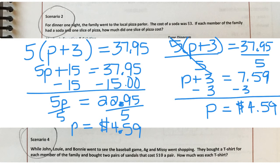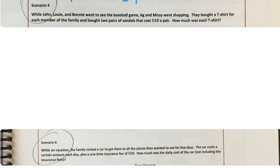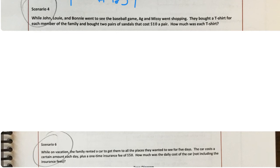Remember, at any time, if I'm going too fast for you, just pause it, make sure you have stuff written down, and then push play again. I'm going to move on to scenario four. Same family. While John, Louie, and Bonnie went to the baseball game, Ag and Missy went shopping. They bought a t-shirt for each member of the family and bought two pairs of sandals that cost $10 a pair. How much was each t-shirt? So what we don't know is the t-shirt. So I'm going to assign that as T. And they said they bought one for each member of the family. So that's five of them. So five times T. And then they brought two pairs of sandals, which cost $10 a pair. So two times 10, you can write two times 10, or you can go ahead and write the 20.